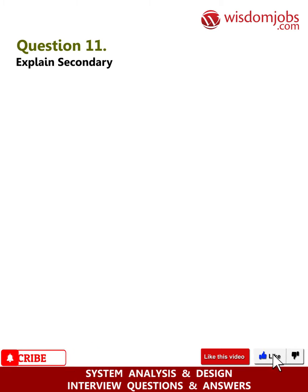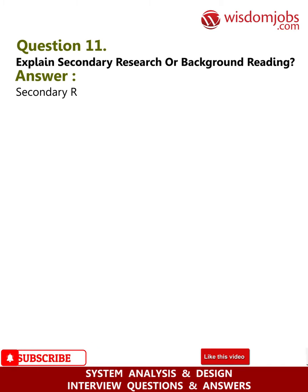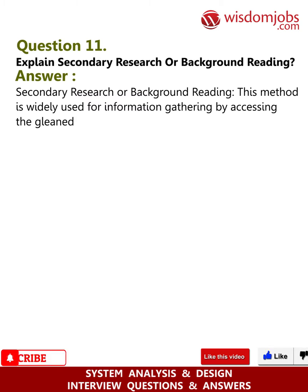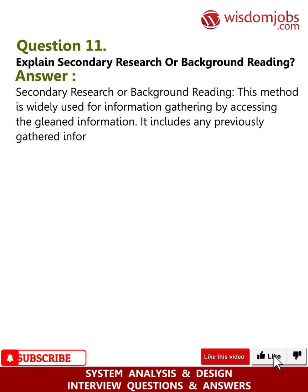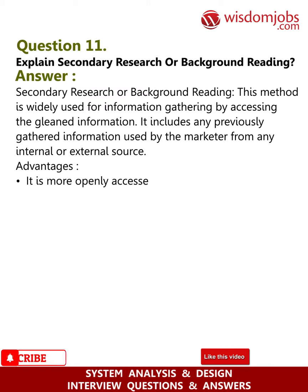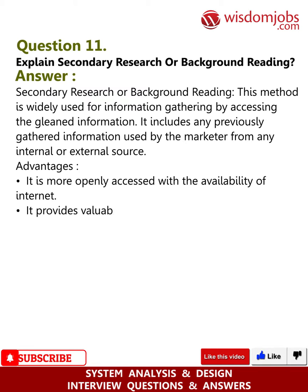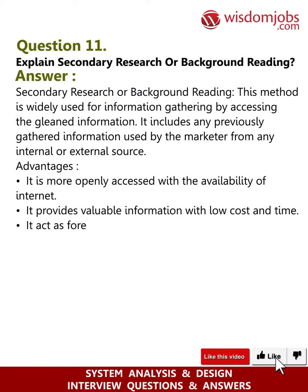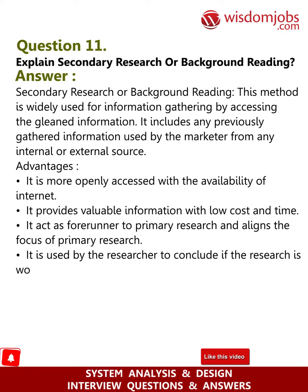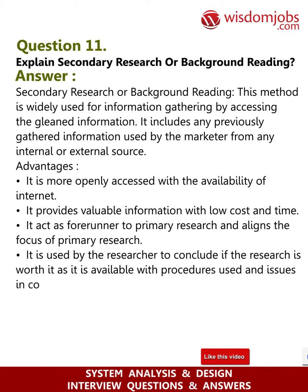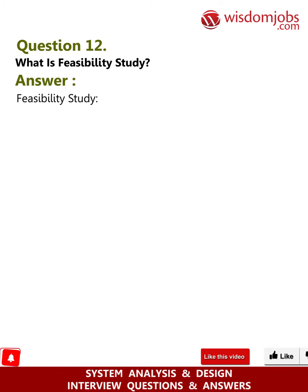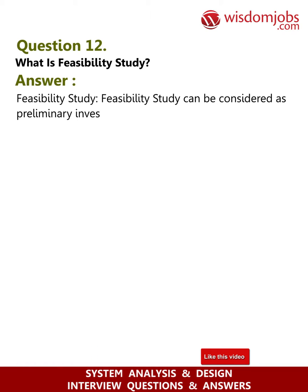Question 11: Explain secondary research or background reading. Answer: Secondary research or background reading is a method widely used for information gathering by accessing previously gathered information. It includes only previously gathered information used by the marketer from any internal or external source. Advantages: it is more openly accessed with the availability of the internet; it provides valuable information with low cost and time.